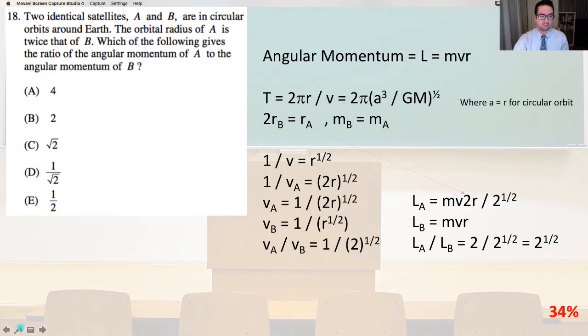Now let's plug that into our angular momentum. We know v and we know r. So the angular momentum L of A equals mv times 2r over the square root of 2. The angular momentum of B equals mvr, and L of A over L of B equals 2 over the square root of 2 equals the square root of 2, and that is answer C.